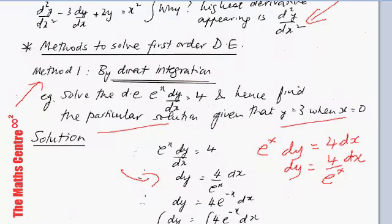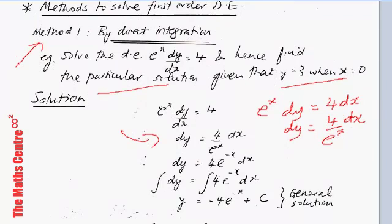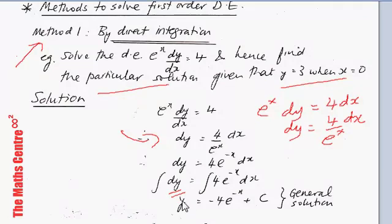When we have dy on the left and dx on the right, we can introduce our symbols of integration and perform the integration. When you integrate dy you get y, with the constant placed on the right-hand side. Integrating 4e^(−x) gives −4e^(−x) plus c. This is the constant of integration, giving us the general solution of this differential equation.